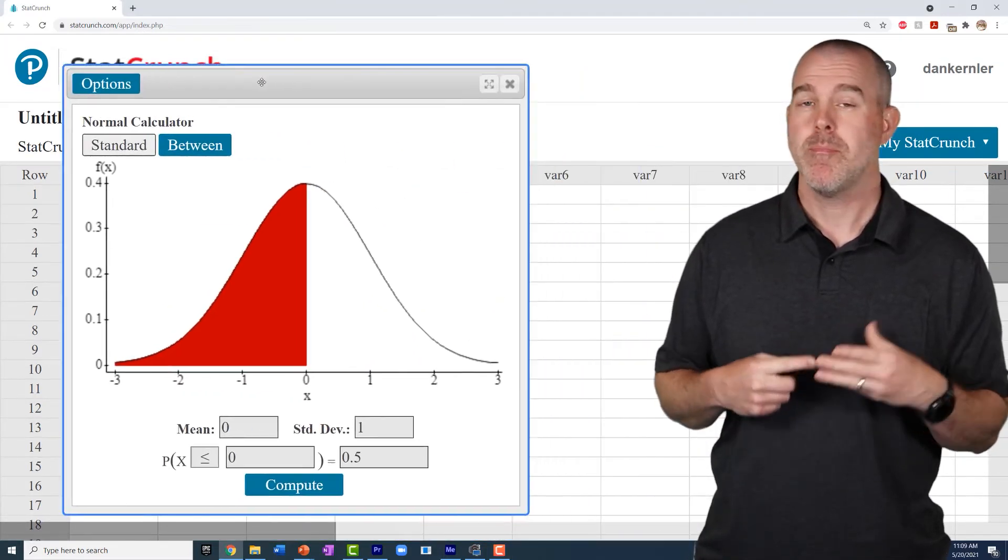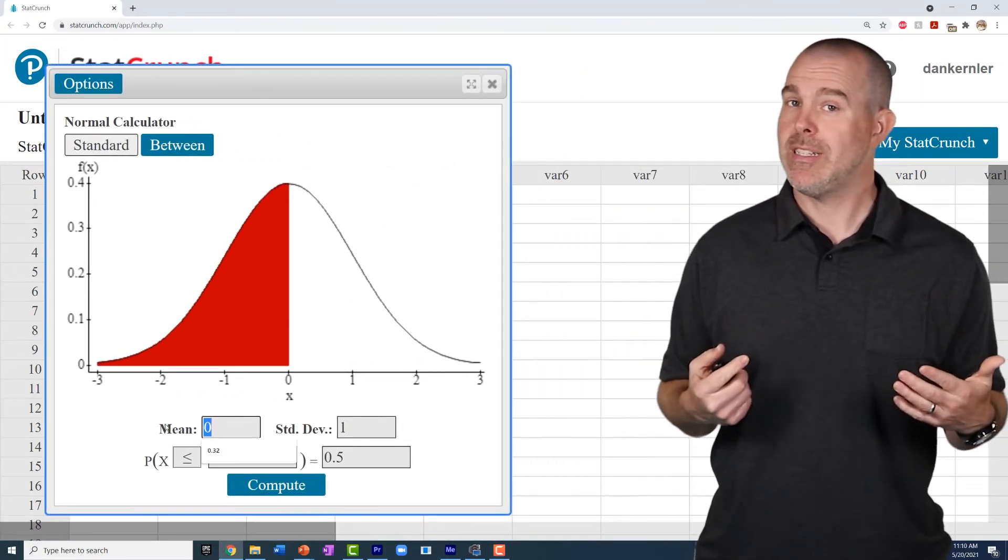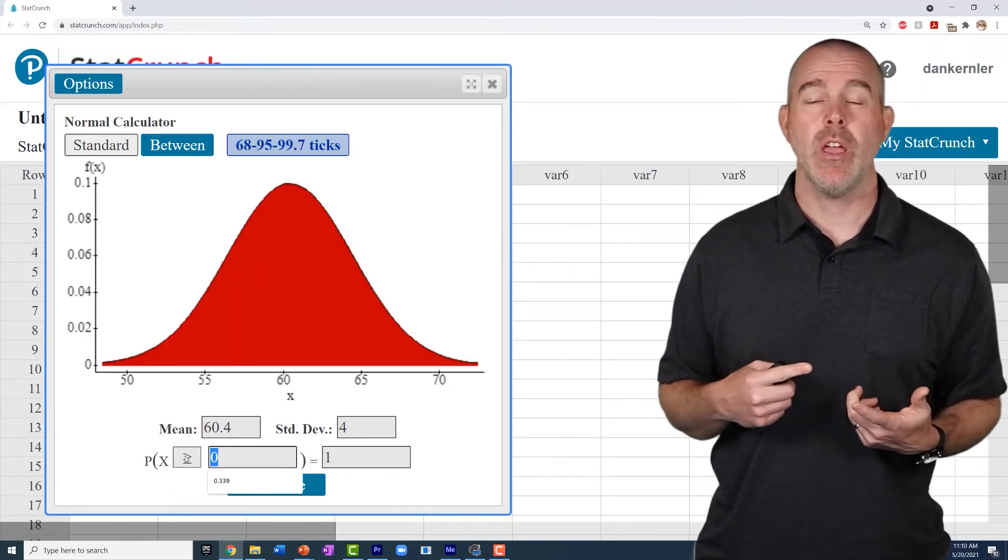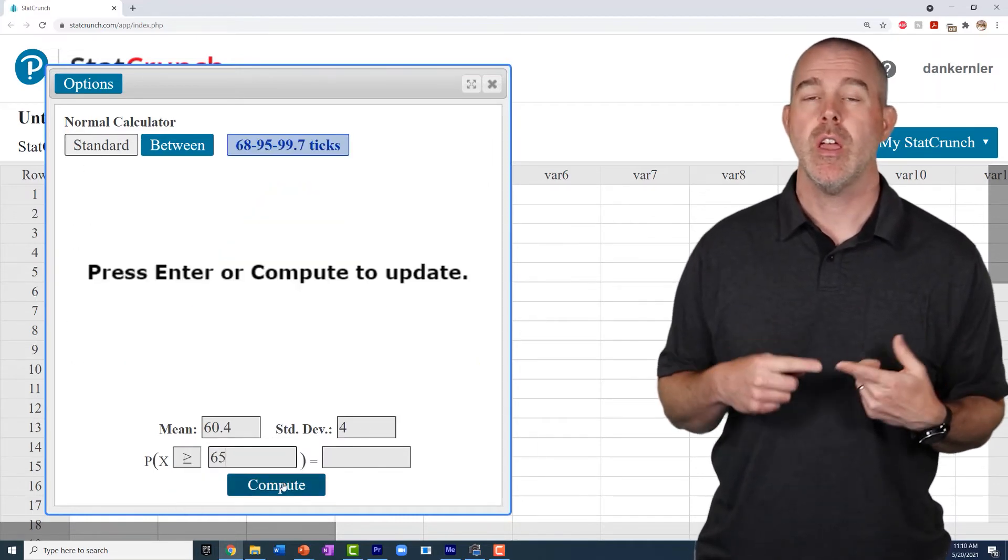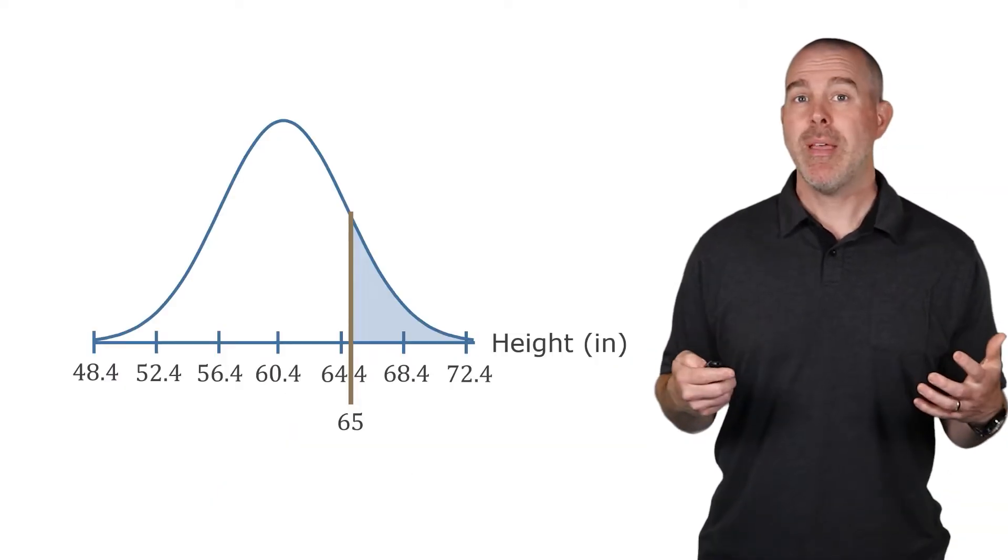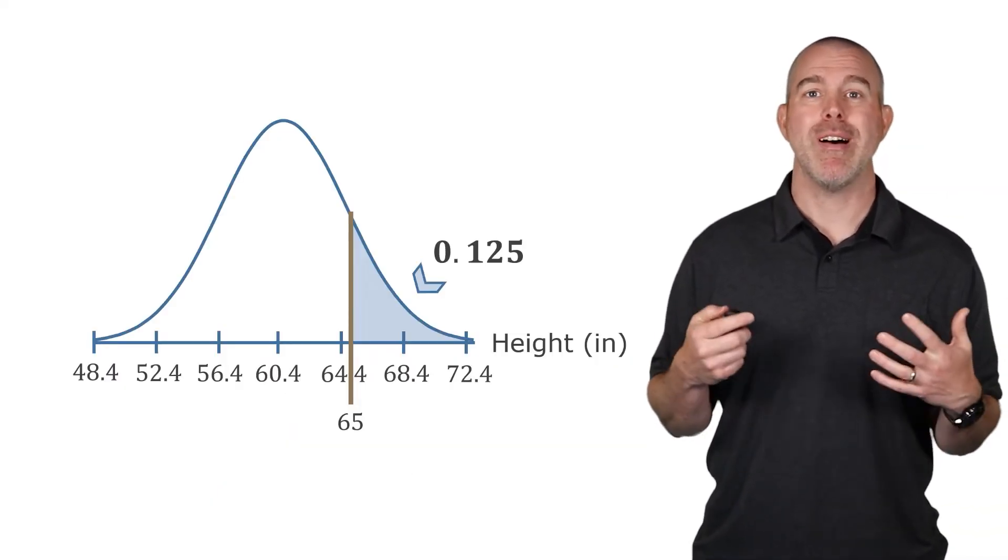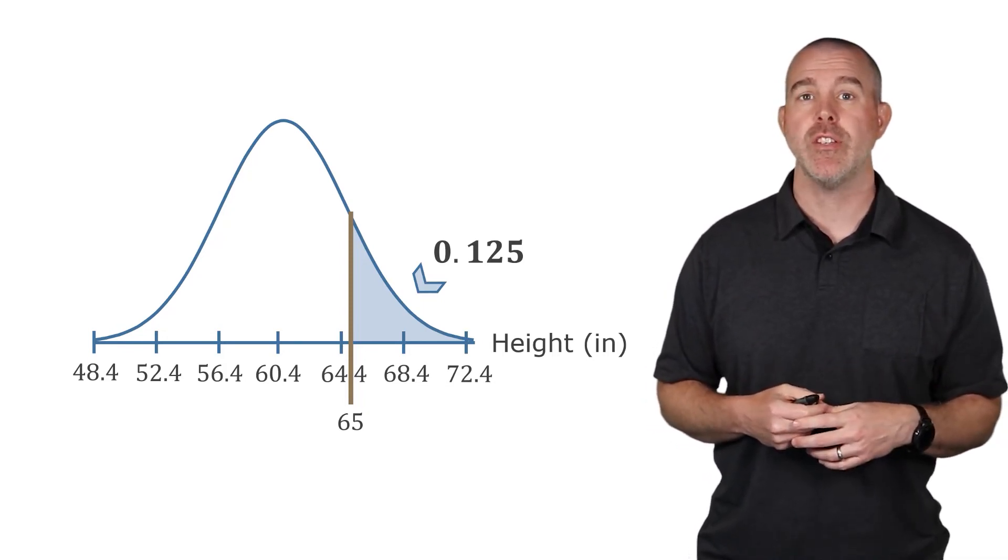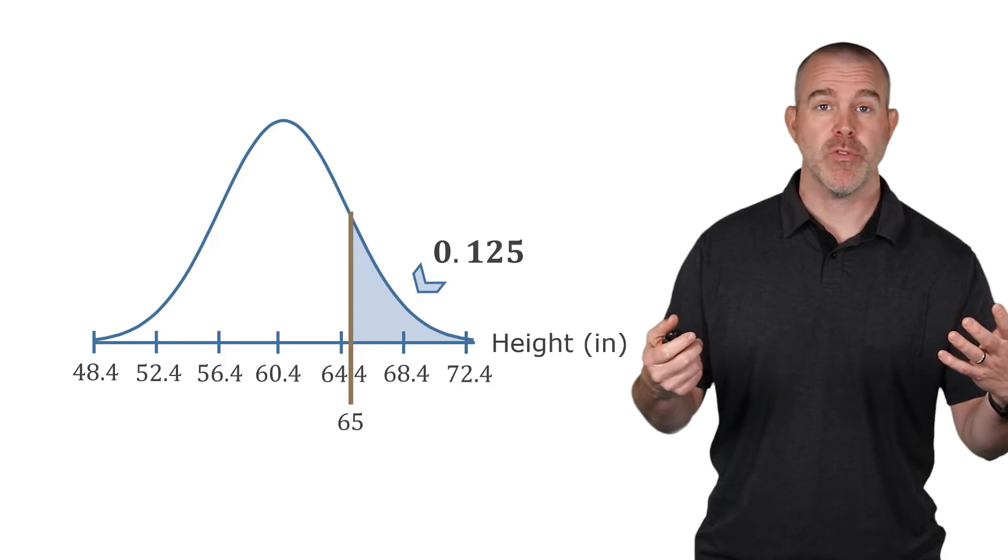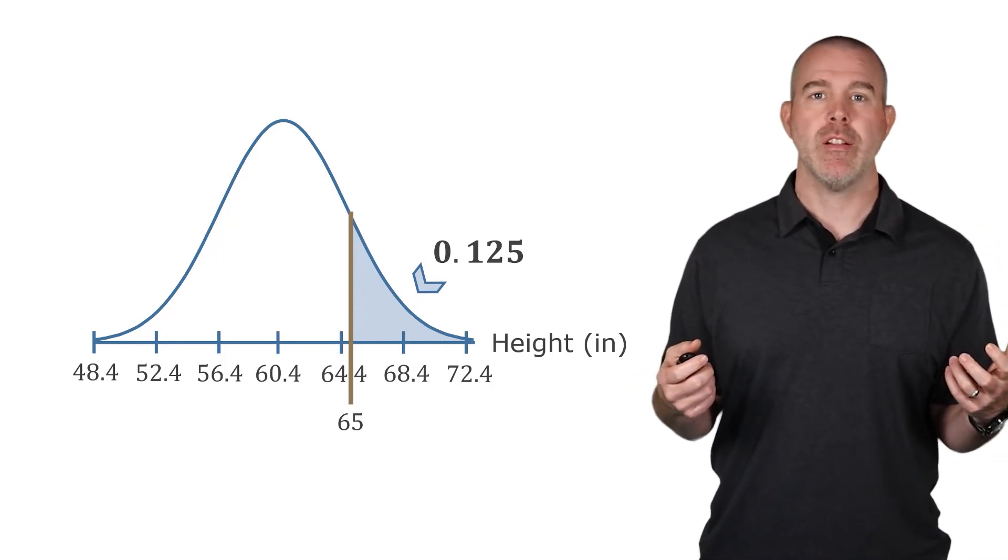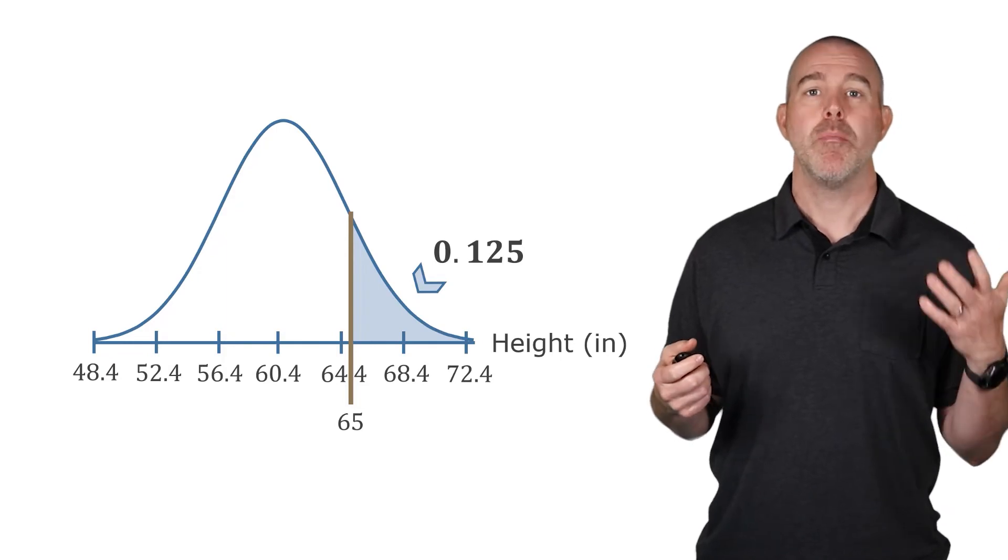Enter in our mean, 60.4, and our standard deviation of 4. Change the inequality to be greater than or equal to. Type in our 65, hit Compute. And there we go. So that means there must be about 0.125, about 12.5% of all 12-year-old boys are taller than 65 inches. Or again, in terms of probability, the probability that a randomly selected 12-year-old boy is taller than 65 inches is 0.125.